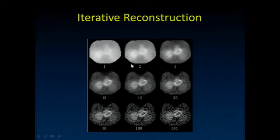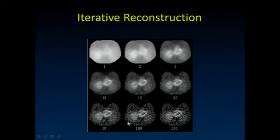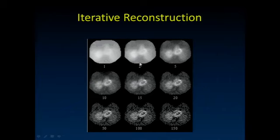We first used iterative reconstruction in nuclear medicine. Here's a cardiac study showing the entire chest. Here are the number of iterations: 1, 2, 5, 10, 15, 20, 50, 100, 150. As you continue to iterate, the data tends to get noisier and noisier—you amplify noise with more iterations. So you've got to pick your stopping point. When I ask people which image looks best, there's quite a bit of variation; some say stop at 10, others at 20. But people mostly pick something in that middle row.